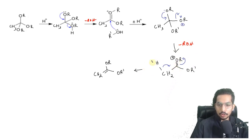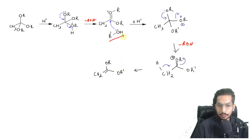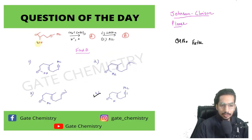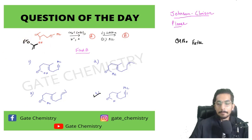In the next step, the conjugate base of the acid abstracts a proton, the electrons migrate, and we end up with a key intermediate: R-dash-O (our alcohol) attached to a carbon that is double-bonded to CH₂ and also attached to an OR group — in this case OEt. So the intermediate has an alcohol oxygen attached to a carbon bearing a double bond and an OEt group.